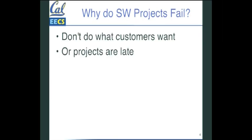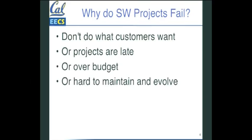Or projects are late — we're going to talk about how you estimate time to get things done. You run out of time and money, so that's another reason to fail. Or you're over budget, run out of money. Or you get it working and the first version is okay, but it's really hard to maintain and evolve, and people expect software today to be maintainable. Or you get them all wrong.